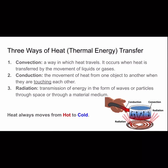The three ways of heat transfer are convection, conduction, and radiation — you probably heard about these in seventh and eighth grade, so this is a review. Convection occurs when heat is transferred by the movement of liquids or gases — like molecules moving around inside a pot on the stove. Conduction is the movement of heat from one object to another when they are actually touching each other. Radiation is the transmission of energy in the form of waves or particles through space or through a material medium.